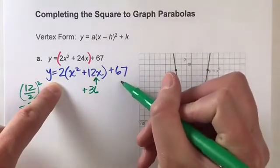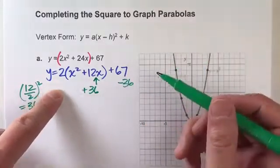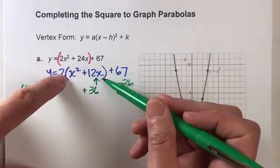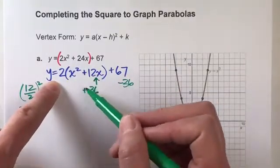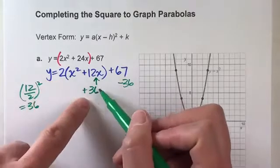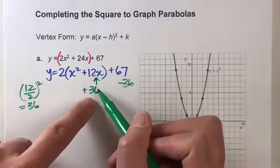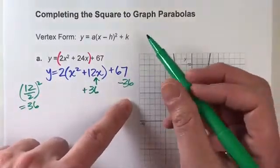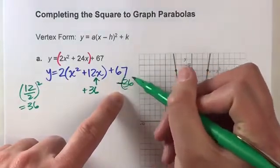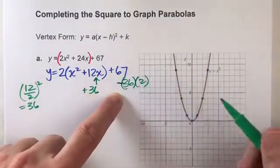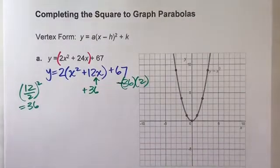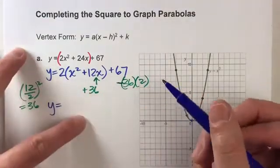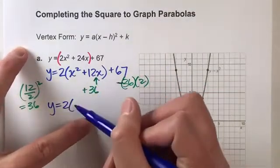So I'm also going to subtract 36 on the same side. But one thing you really need to pay attention to is that this 36 we're adding is in parentheses and being multiplied by 2. So technically, we're not really adding just 36 to this side of the equal sign. We're adding 36 times 2 because we stuck it in the parentheses. So when I subtract the 36, I'm not just subtracting 36. I need to subtract 36 times 2.